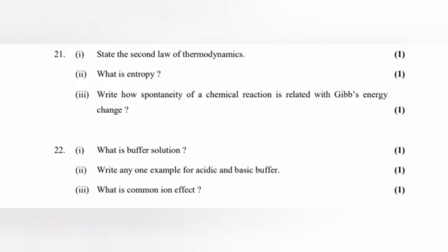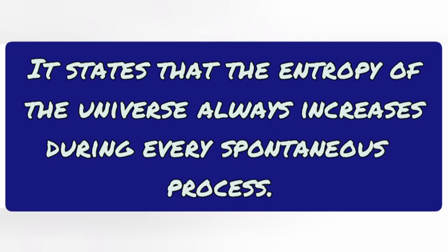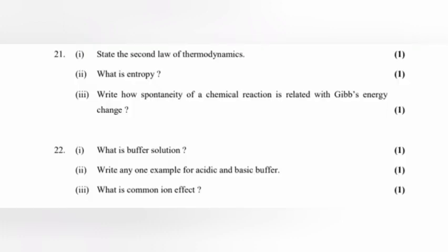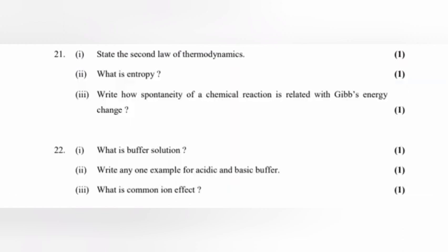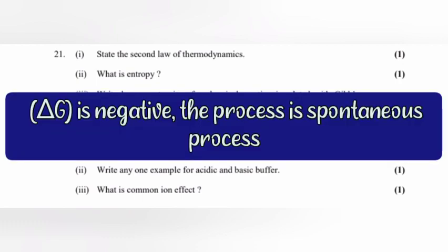Question 21, part 1: State the second law of thermodynamics. Answer: It states that the entropy of the universe always increases during every spontaneous process. Part 2: What is entropy? Answer: Entropy is a measure of degree of disorderness or randomness of a system. Part 3: Write how spontaneity of a chemical reaction is related with Gibbs energy change. Answer: If Gibbs energy change is negative, the process is spontaneous.